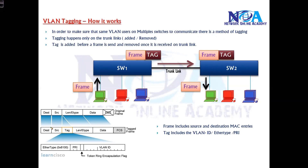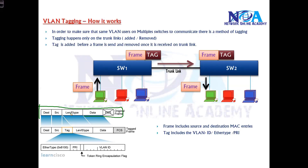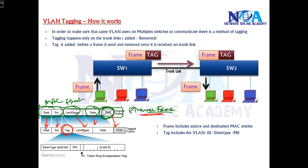Looking at the Ethernet frame format: this is your actual Ethernet frame, which contains the source and destination MAC addresses, the type or length field, the actual data, and the frame check sequence for error correction. This is your actual Ethernet frame, and it is additionally added with a tag. All the original fields remain the same — one additional piece of information called a tag is added.